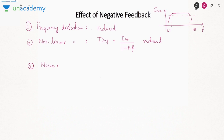The third factor is noise. Noise is a high-frequency unwanted signal introduced in the system either externally or internally — due to environment or external components. That noise is also reduced due to feedback: noise with feedback = open-loop noise / (1+Aβ). The noise in the output signal is reduced when using a feedback amplifier rather than an open-loop amplifier.